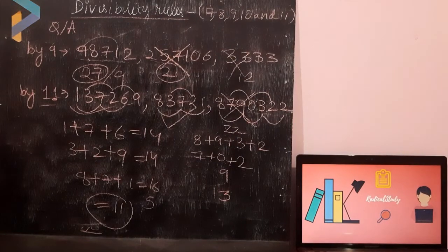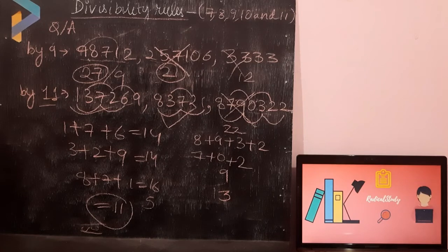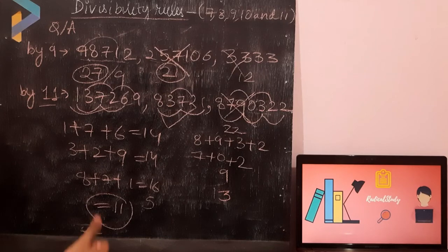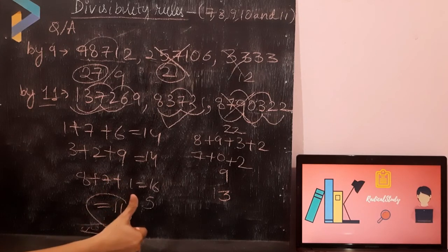So I hope you all have understood the concept of divisibility rules for 7, 8, 9, 10 and 11. By the end of this video I am going to give you a few questions based on this. I hope you must have understood. Please like, share and subscribe. Thank you.